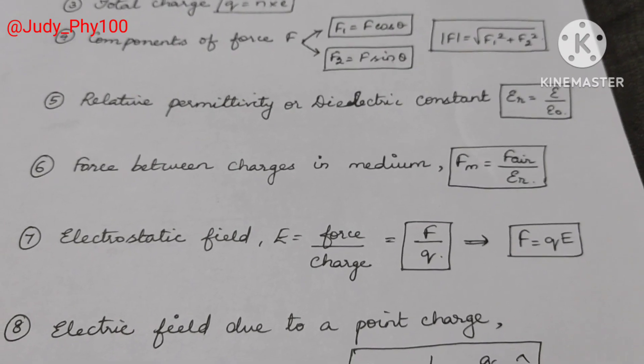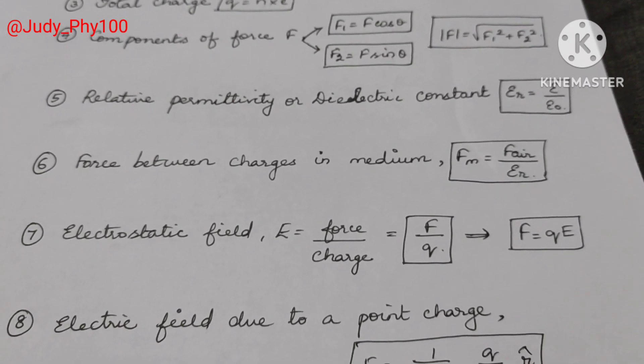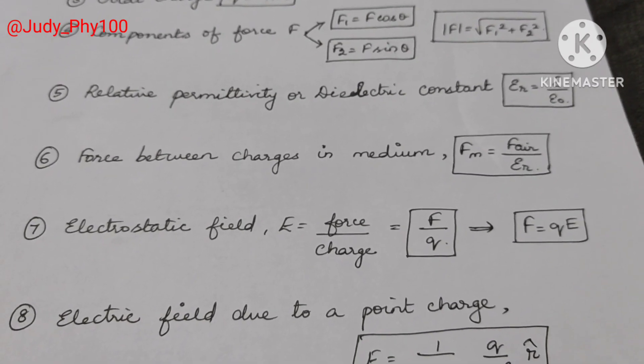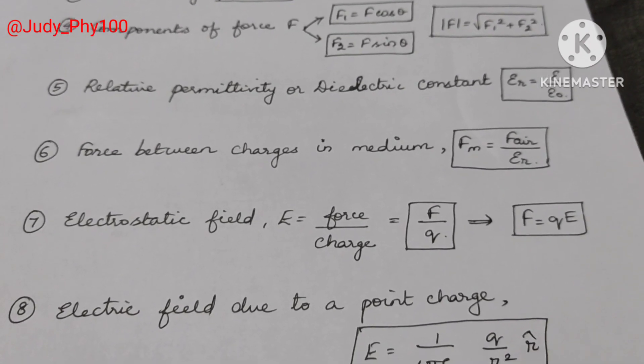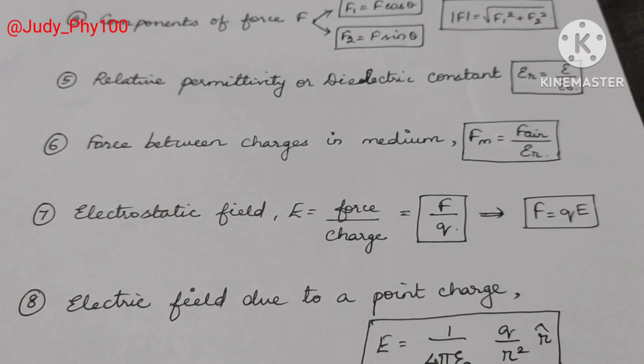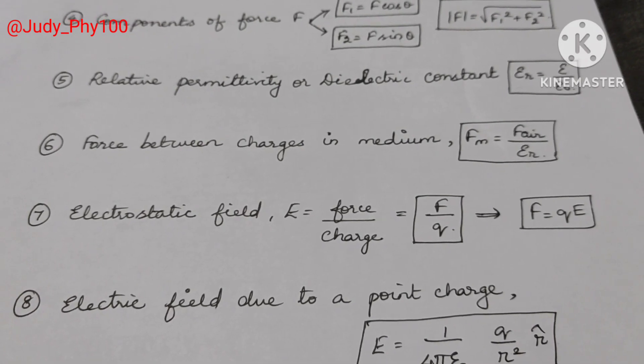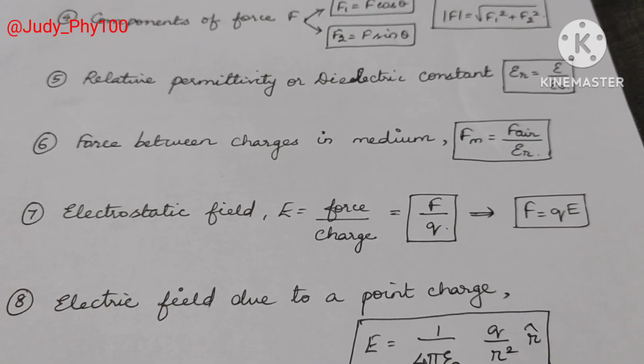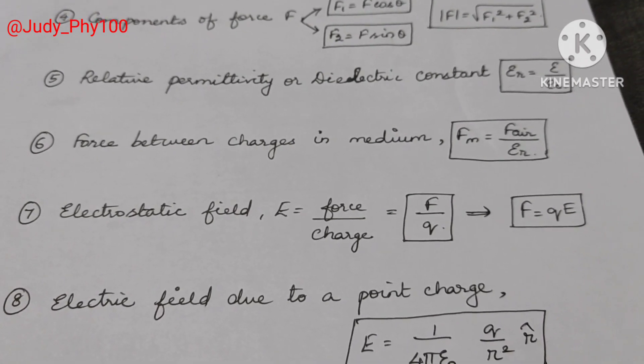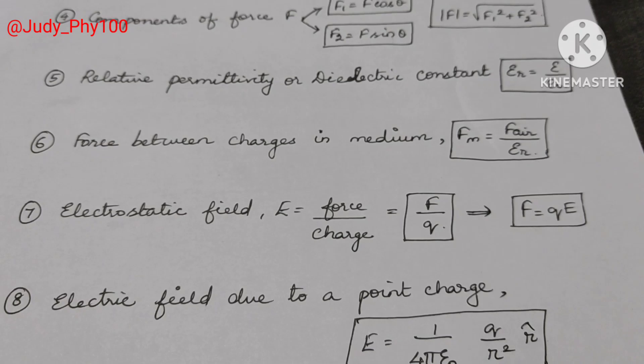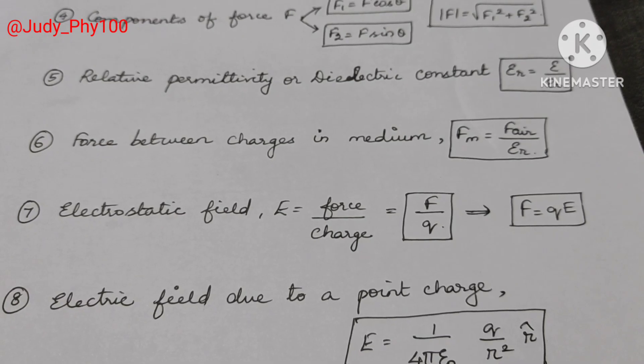Electric field due to a point charge: E is equal to 1 by 4 pi epsilon naught, q divided by r squared.